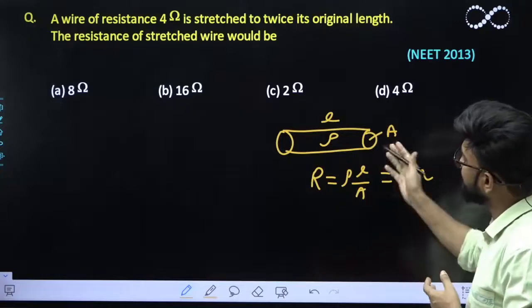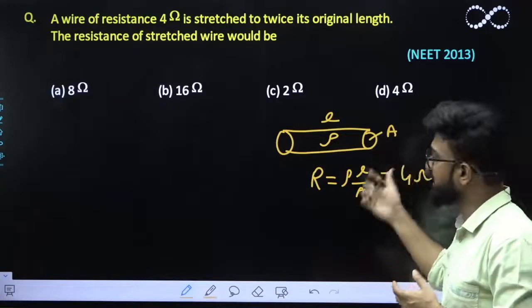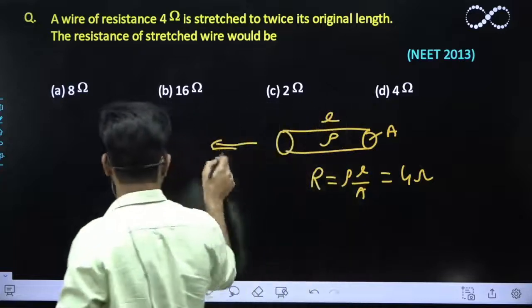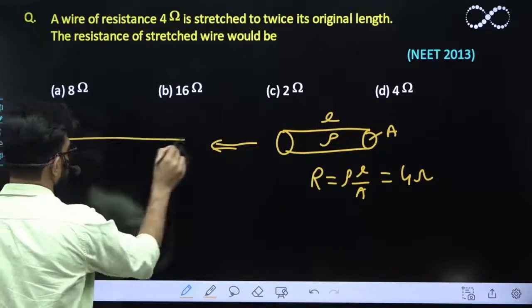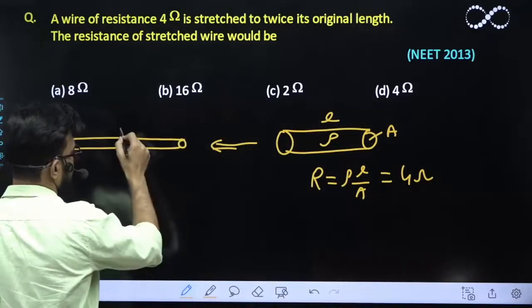Now the length becomes twice its original length. So if the length becomes 2L, the area of cross-section becomes half, keeping the volume constant.